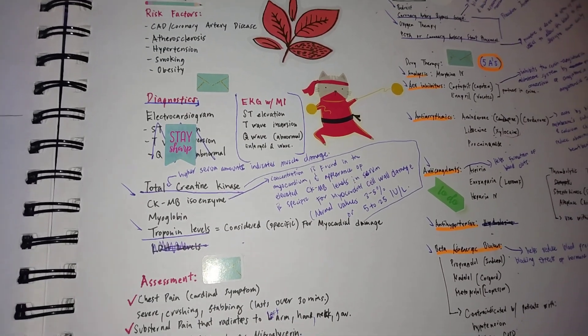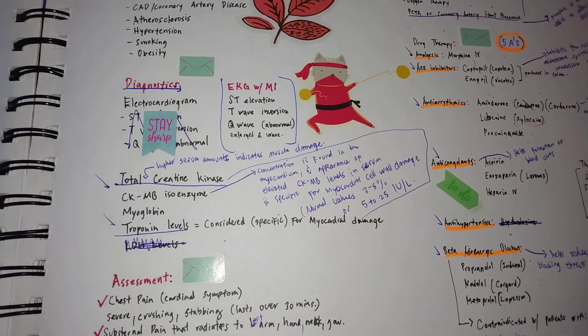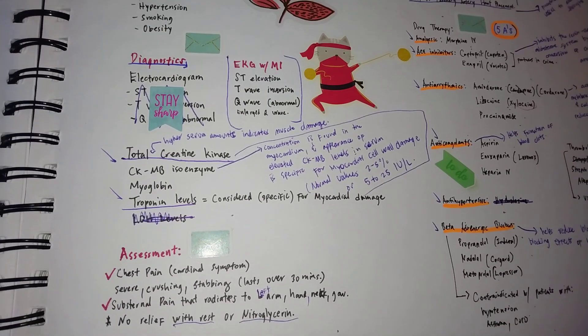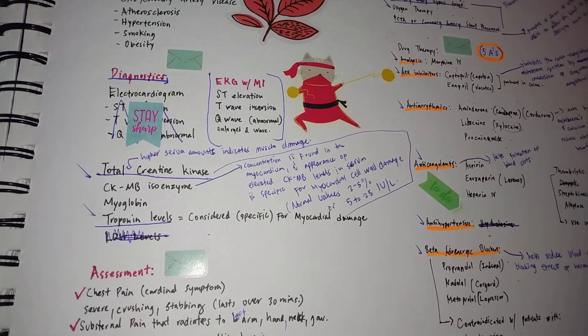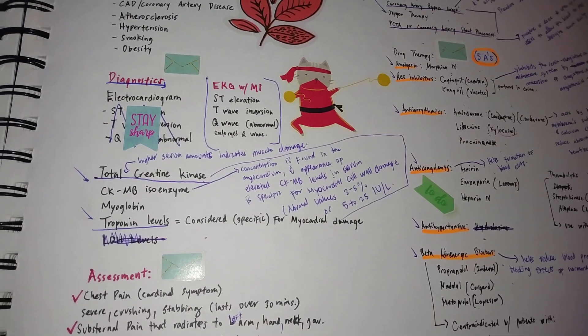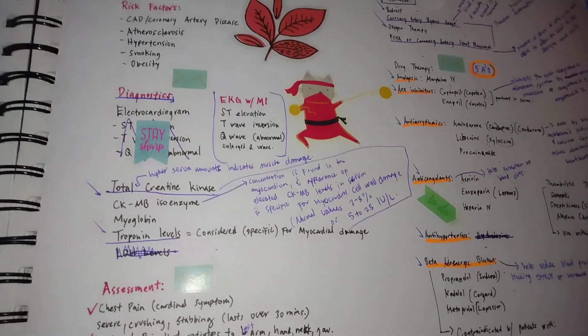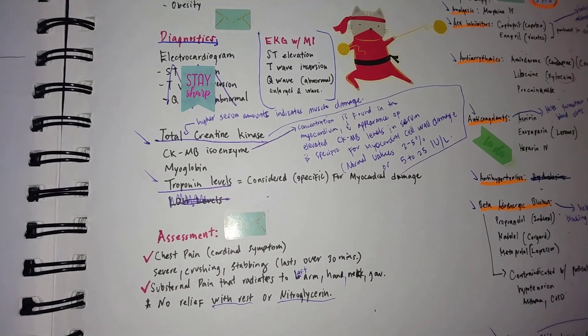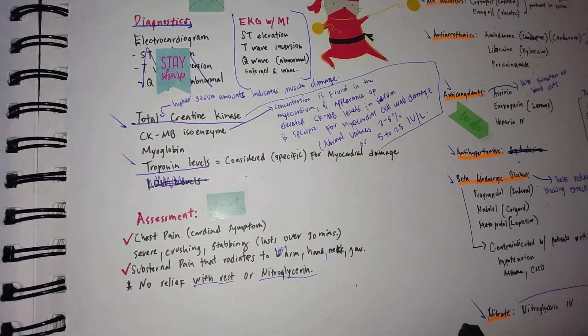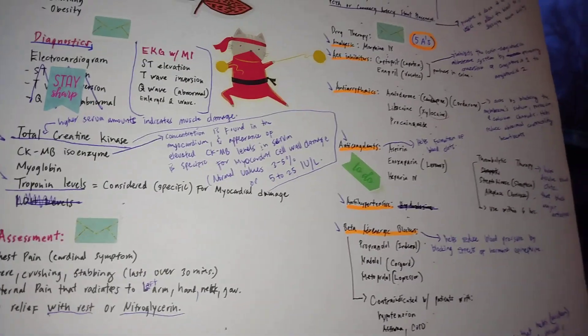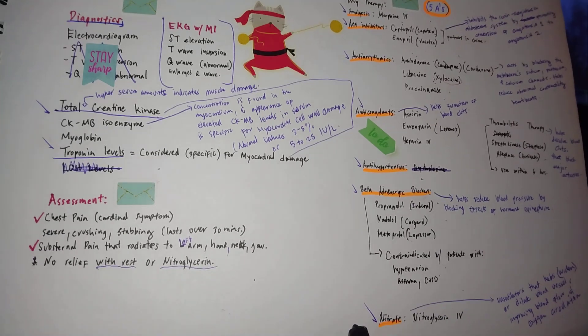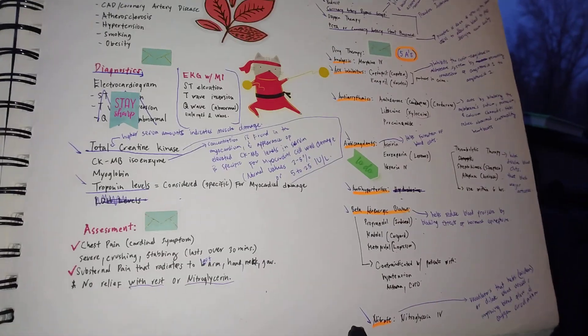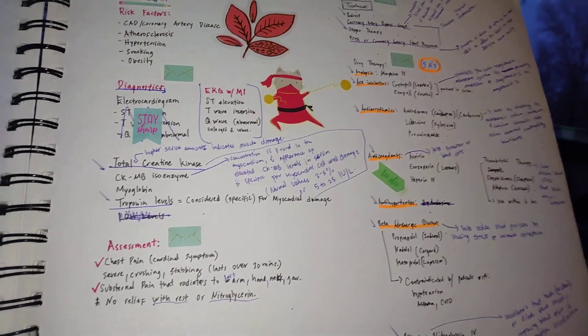Obviously, oxygen therapy is very important. Another procedure that is important as a source of treatment is your coronary artery stent placement or PTCA. Basically, the procedure is done to open the blood flow vessel to allow blood to pass through more easily with the stent placement. With drug therapy, I have what I call the five A's in regards with drug therapy for a patient with MI.